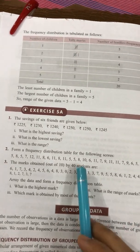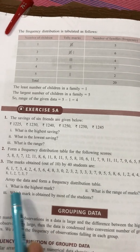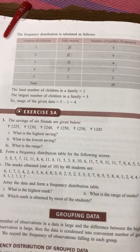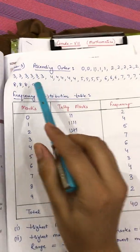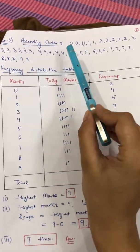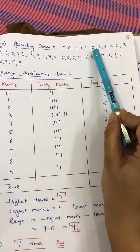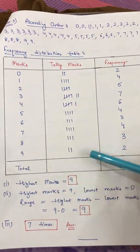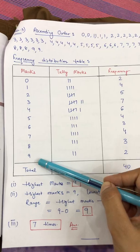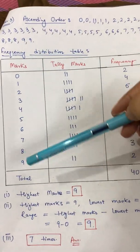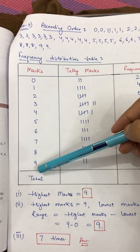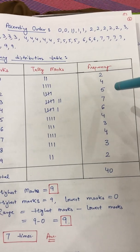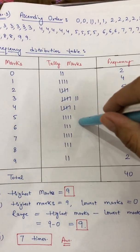The third question: marks obtained by 40 students are given below. Arrange the data in a frequency distribution table and find the highest marks, range, and which mark is obtained by most students. First, arrange in ascending order: 0, 0, then 1, 1, 1, then 2, 2, 2, 2, then 3, 4, 5, 6, 7, 8, 9. The last column is always frequency and the middle column is always tally marks.